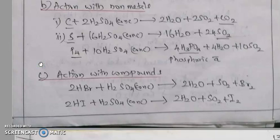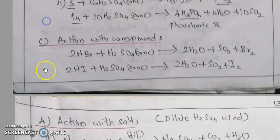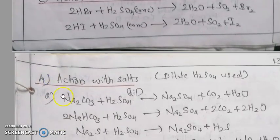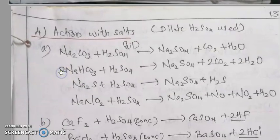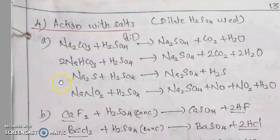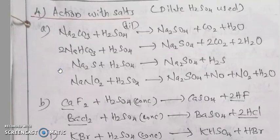HBr reacts with concentrated sulfuric acid to give water, sulfur dioxide, and bromine (H2O, SO2, and Br2). Also SO2 and I2 are products with HI. Next, action with salts: dilute sulfuric acid reacts with salts such as sodium carbonate and sodium bicarbonate to give sodium sulfate, carbon dioxide, and water.